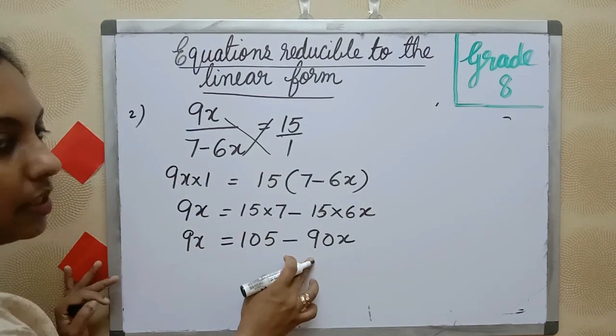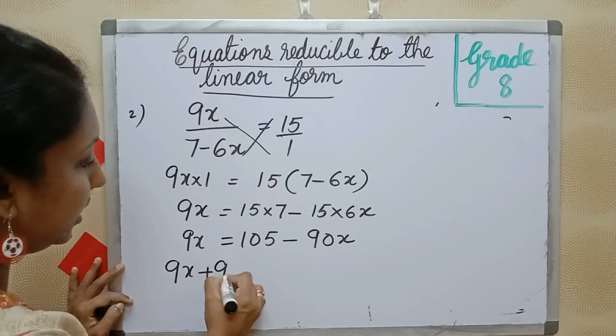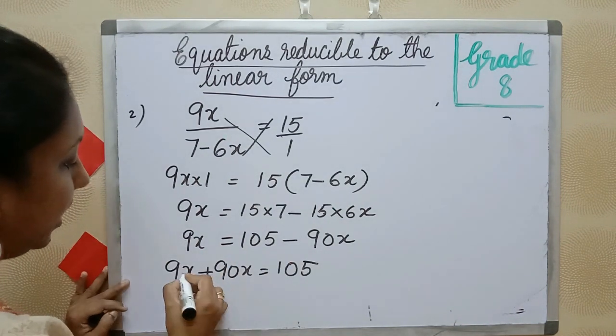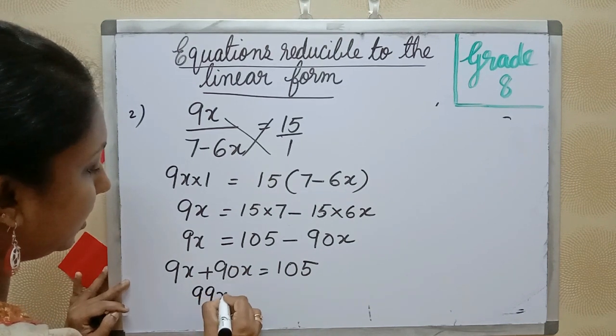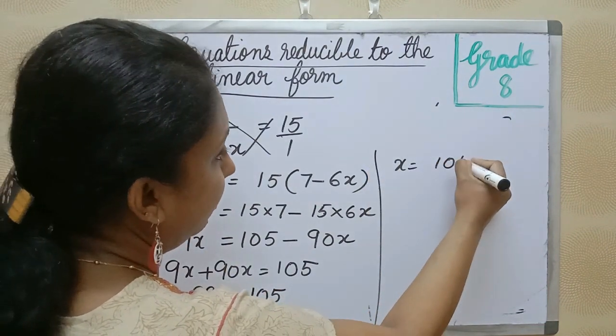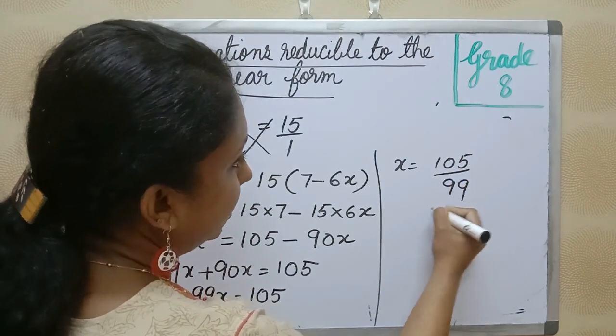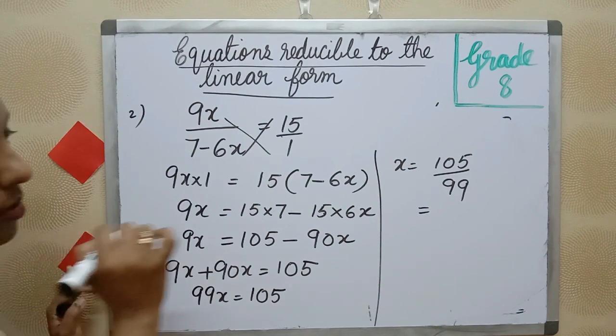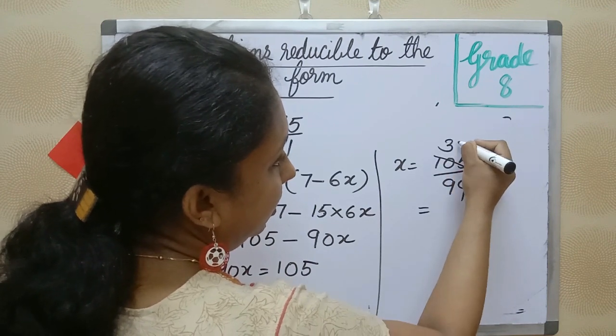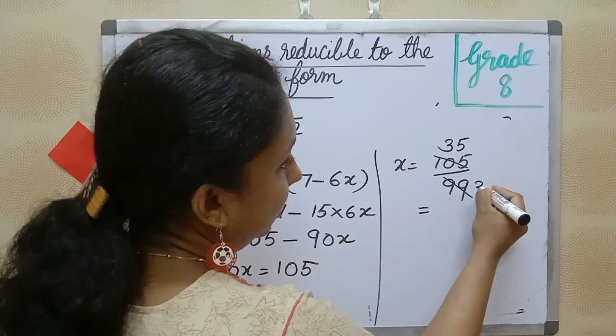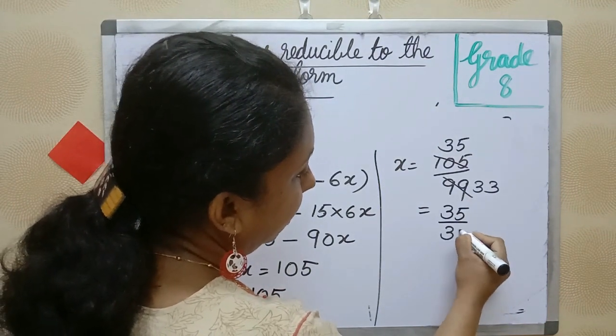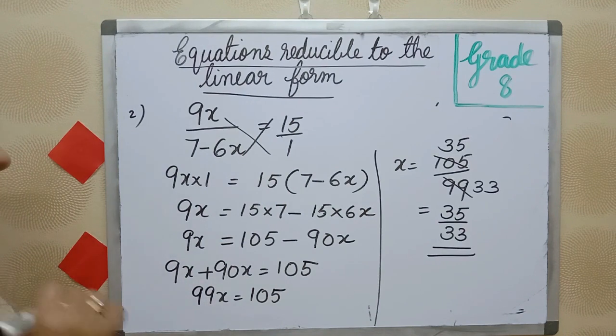Then the transpose method. 9x plus 90x is equal to 105. 99x is equal to 105. Then x is equal to 105 divided by 99. We can simplify with 3. That is 35 divided by 33.